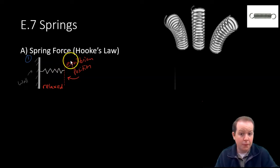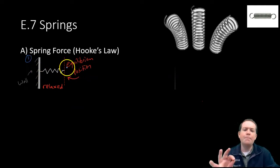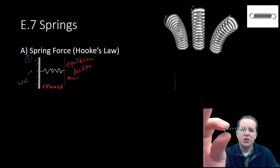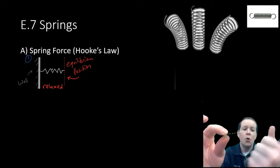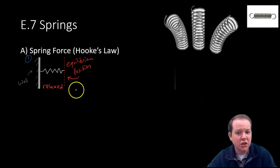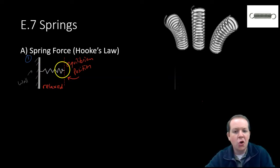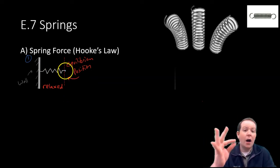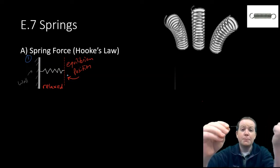Let's analyze the force that comes from a spring using a diagram. I have a spring that's horizontal and attached to a wall. The spring is free on the right-hand side. On the left it's attached to a wall, and it's just staying nice and relaxed. A spring all by itself, when nobody is pushing in or pulling out, has a relaxed position. This is the spring's equilibrium position — no force pushing inwards, no force pushing outwards. It's just relaxed.